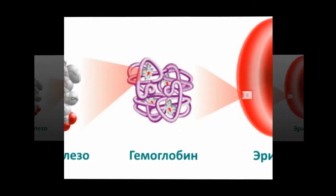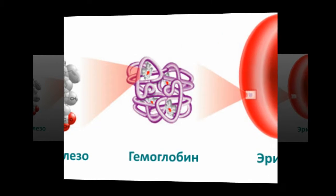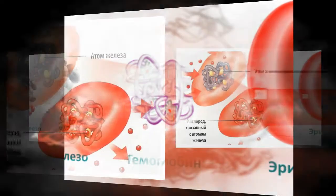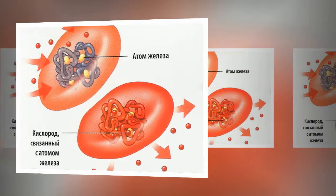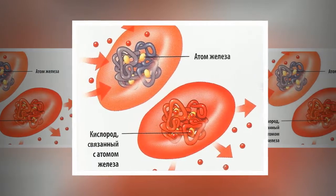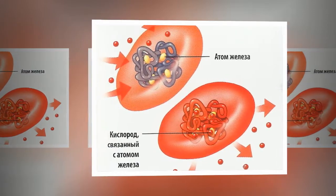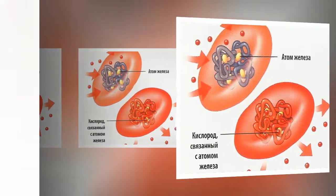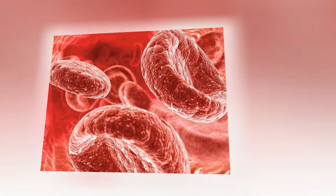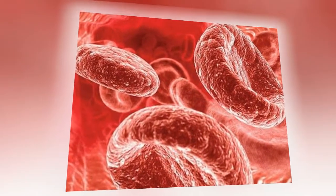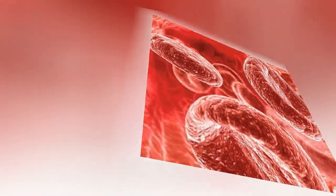Hemoglobin is usually measured as part of the routine complete blood count (CBC) test from a blood sample. Several methods exist for measuring hemoglobin, most of which are done currently by automated machines designed to perform different tests on blood. Within the machine, the red blood cells are broken down to get the hemoglobin into a solution.